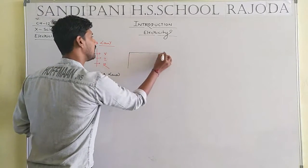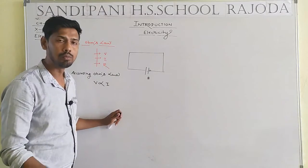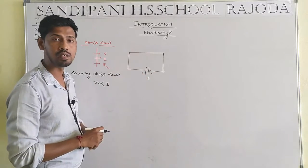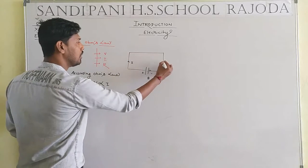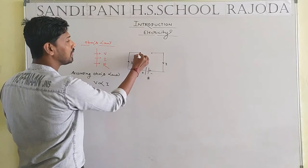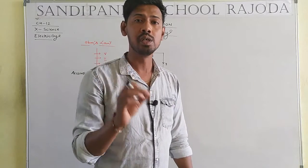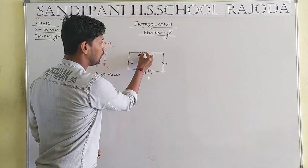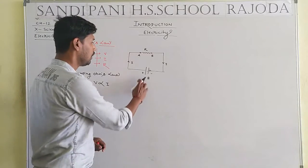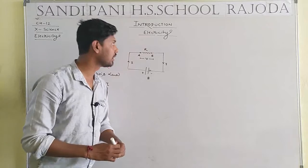Let us consider a closed circuit which consists of an external source, capital B — that means an external battery. This has a positive terminal and a negative terminal. The direction of flow of current is always from positive to negative. Between point A and point B, we consider an insulating copper wire. The resistance of the copper wire will be equal to capital R.